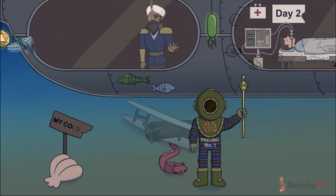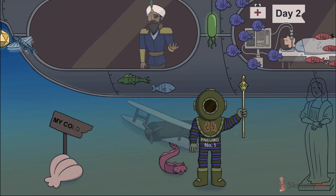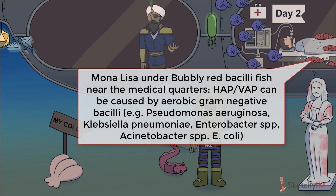HAP and VAP are caused by a variety of organisms and can even be polymicrobial. The common aerobic gram-negative bacilli include Pseudomonas aeruginosa, Klebsiella pneumoniae, Enterobacter and Acinetobacter species, and E. coli, represented by a school of red, rod-shaped fish swimming by the medical quarters of the ship.